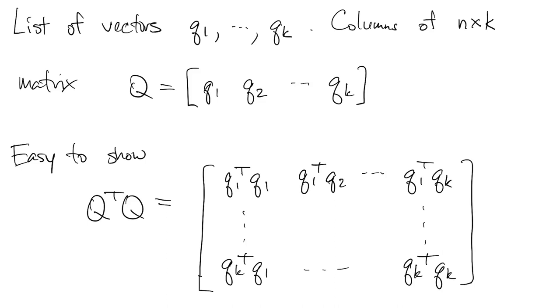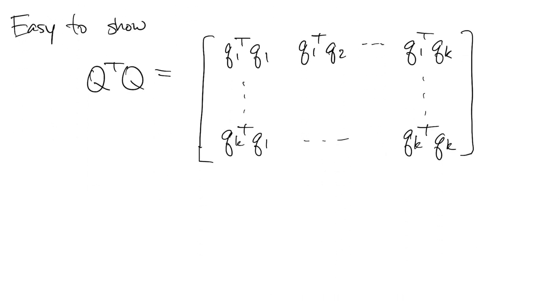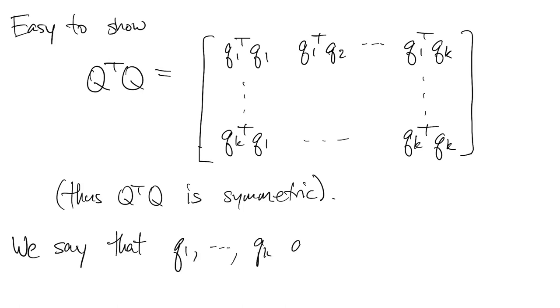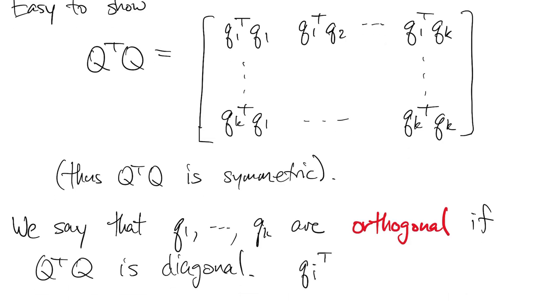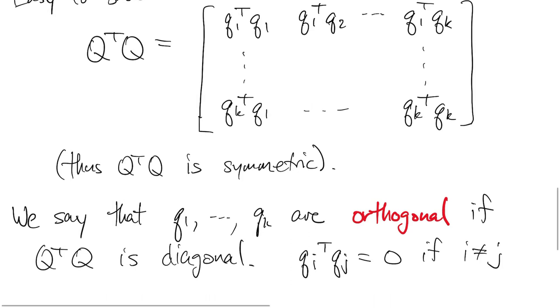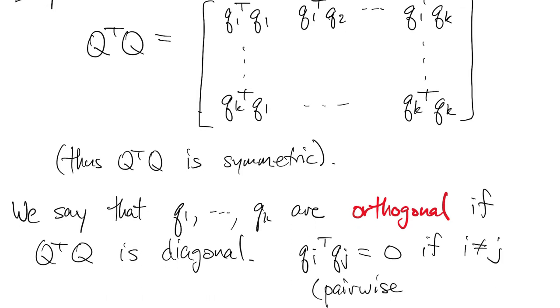So it's a k by k matrix, which you can see is also symmetric. So now we say that this set of vectors is orthogonal if this matrix Q transpose Q is diagonal. In other words, these inner products are zero when you're off the diagonal. In other words, all these vectors are pairwise orthogonal.